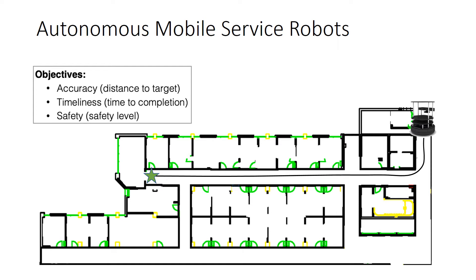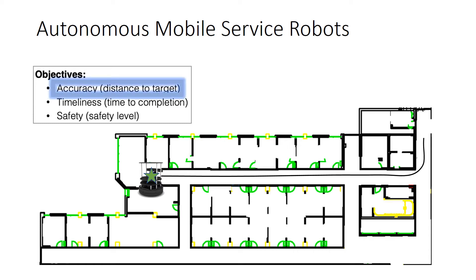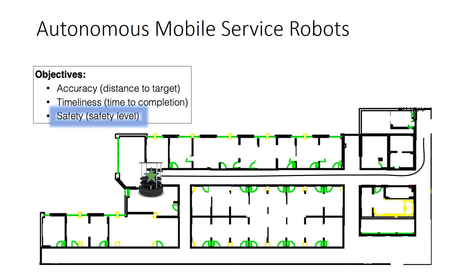This slide shows a simple robotics scenario we'll use to illustrate the concepts presented during this talk. We have a small mobile robot tasked with moving to a specific location within a building, marked by the green star. This robot must accomplish this mission while satisfying non-functional objectives: accuracy — concluding the mission as close as possible to the target location; timeliness — minimizing time to completion; and safety — navigating the physical space safely, minimizing chances of collision against walls and obstacles in the corridors.